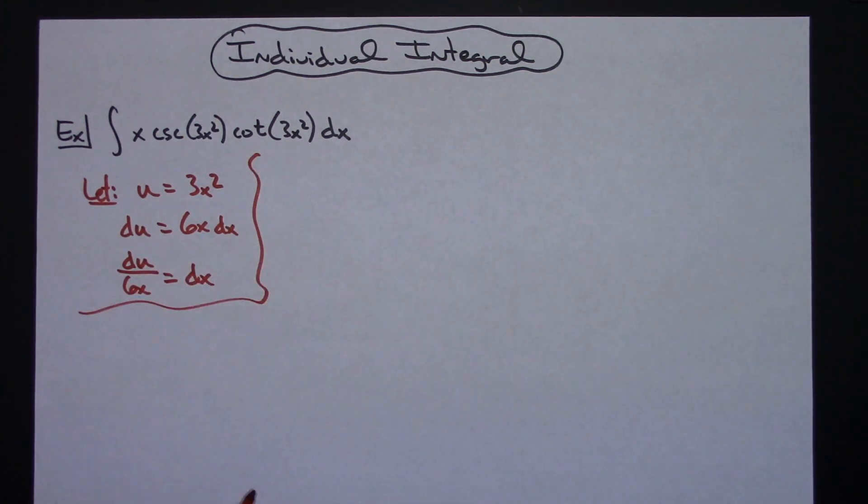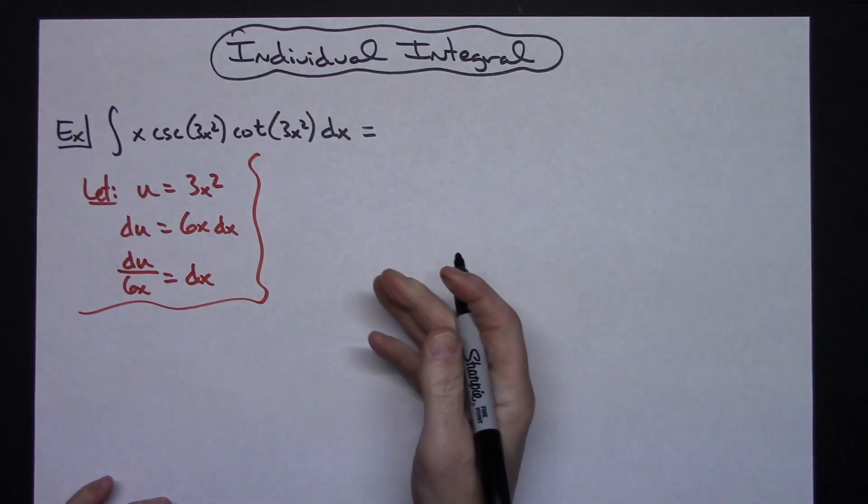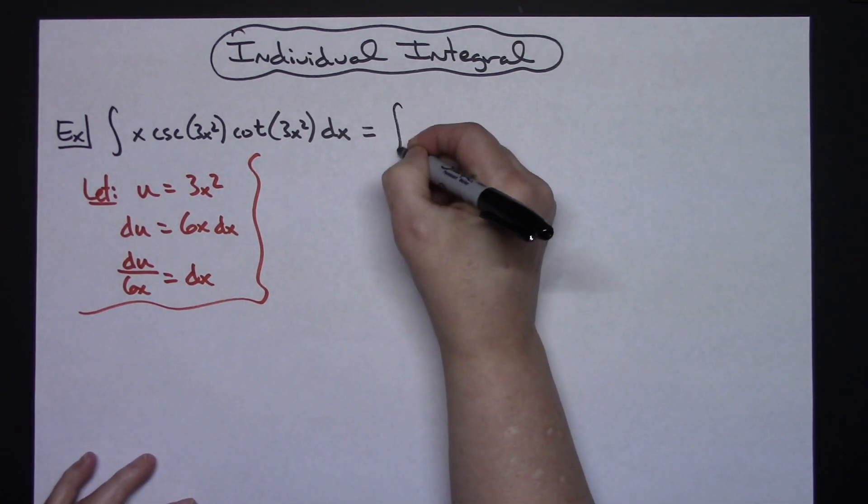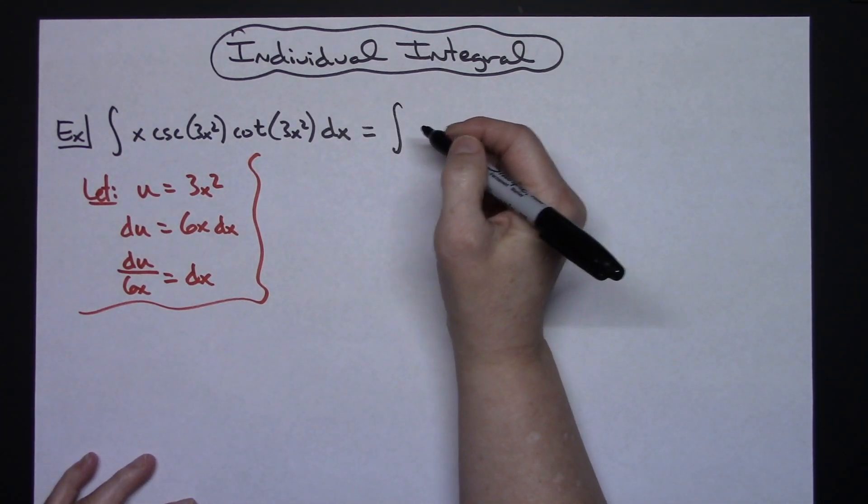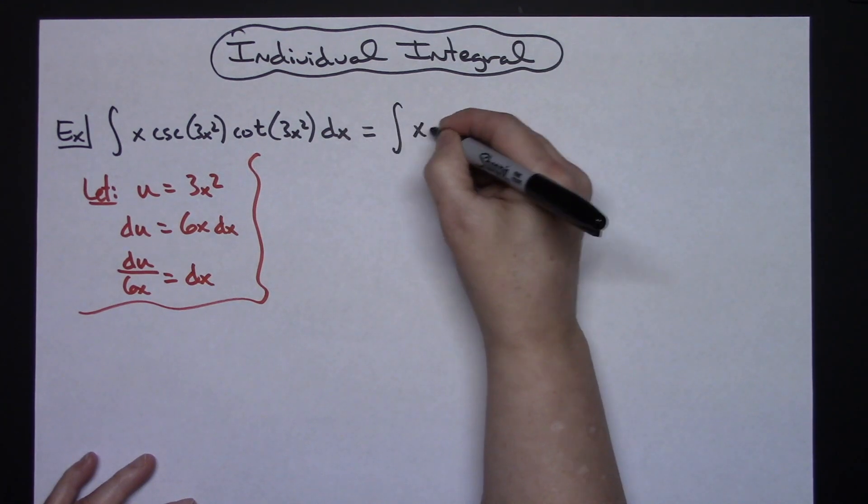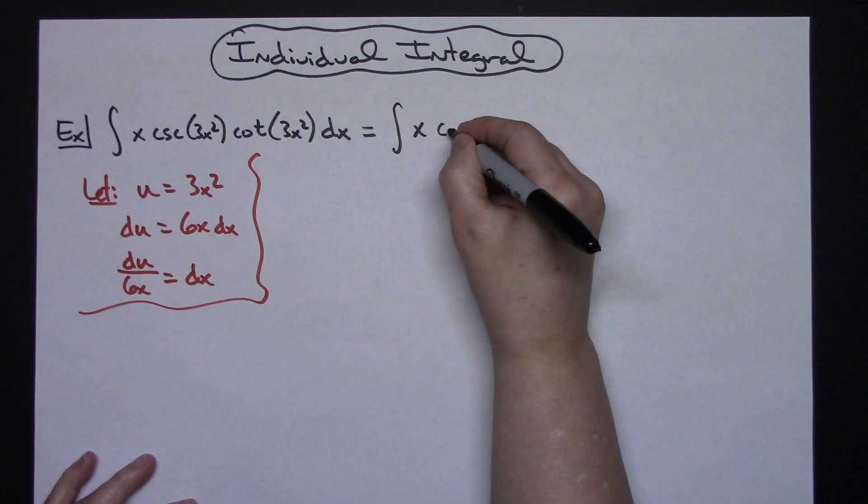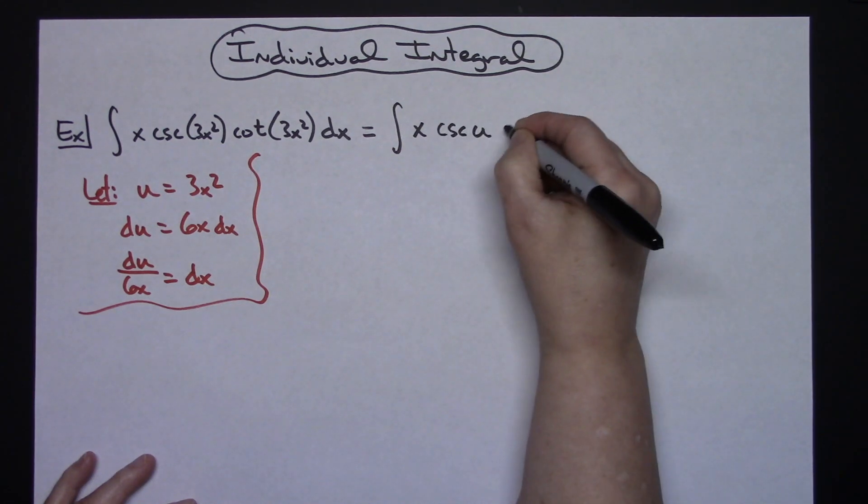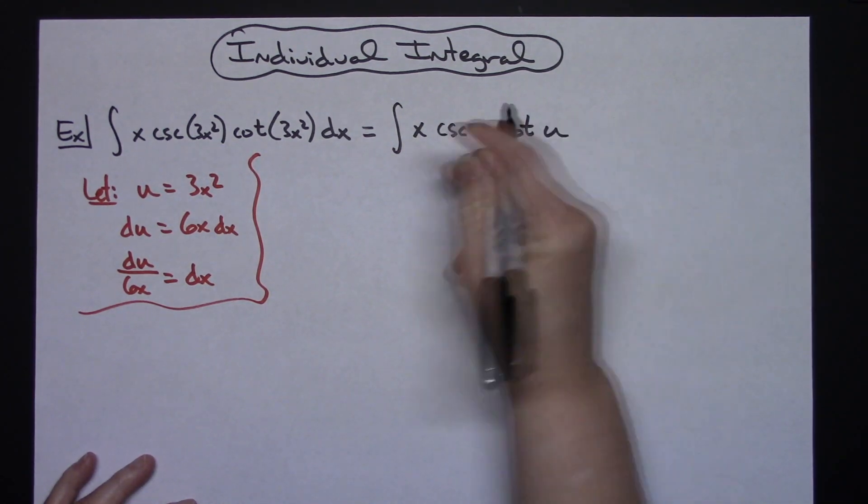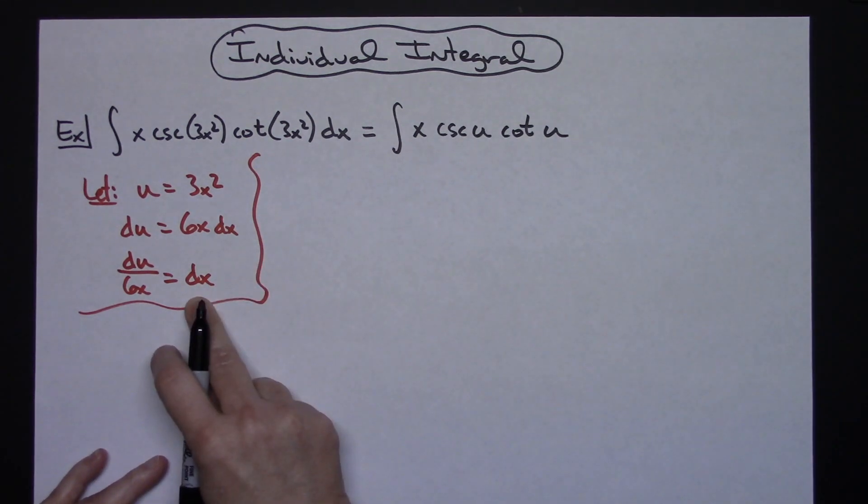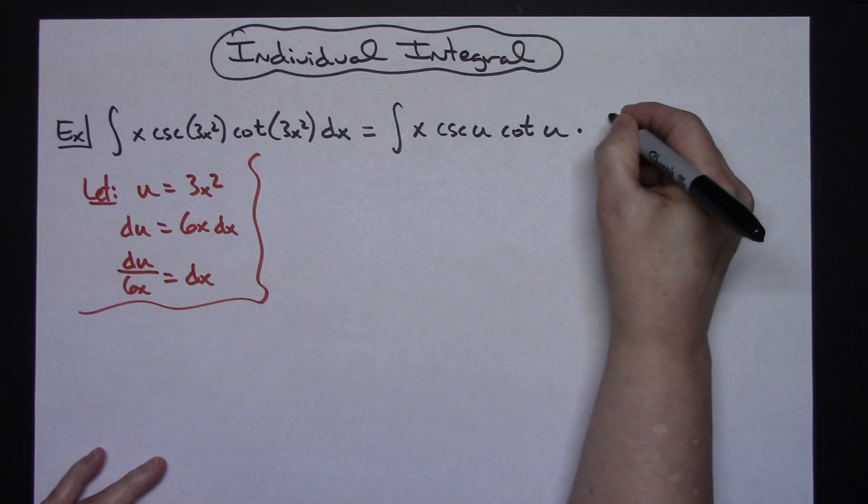Okay, now I'm going to come back up here to the original integral and start making substitutions. I'm still going to have the integral and then I'll have the x, and then I'll substitute u in for cosecant u cotangent u. Taking the dx, I'm going to substitute in du over 6x.